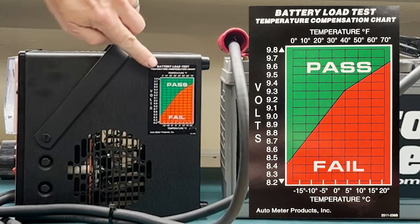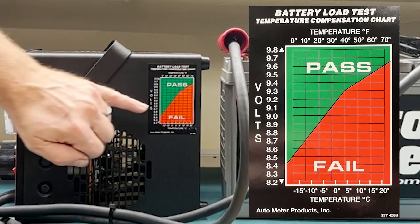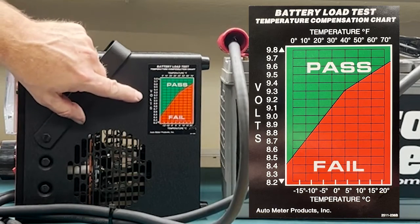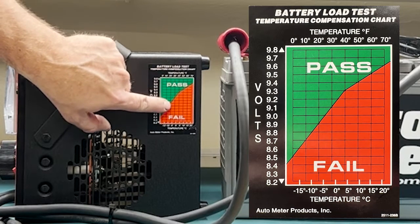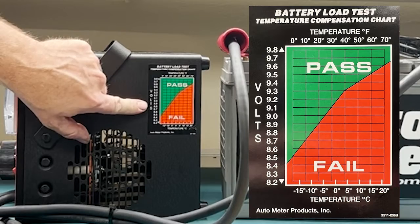When you look at this chart on the side of our tester, you'll see 9.6 is all the way over here at 70 degrees. So if we're testing a battery at 30 degrees, 9.1 is actually an acceptable test voltage.